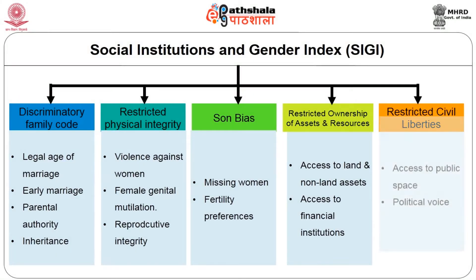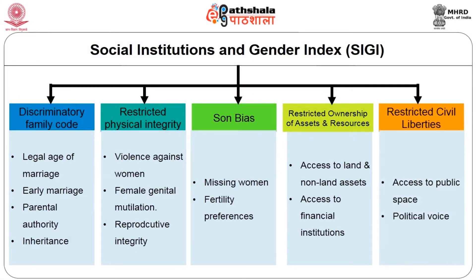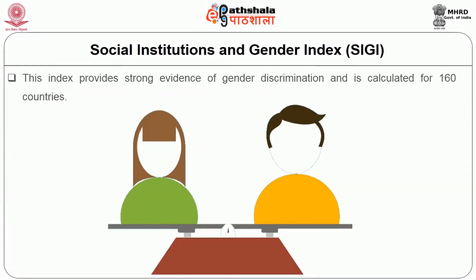The fifth dimension is restricted civil liberties — whether women have restrictions to move freely in public places, whether there are quotas to promote political participation at various levels, and the share of women in national parliaments. This index provides strong evidence of gender discrimination and is calculated for 160 countries.